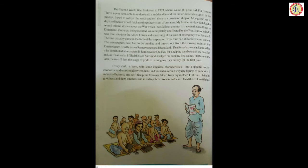'Every child is born with some inherited characteristics into a specific socio-economic and emotional environment and trained in certain ways by figures of authority. I inherited honesty and self-discipline from my father; from my mother I inherited faith in goodness and deep kindness — and so did my three brothers and sisters.' So totally there were five children in the family. From father he inherited honesty and self-discipline; from mother, faith in goodness and deep kindness.